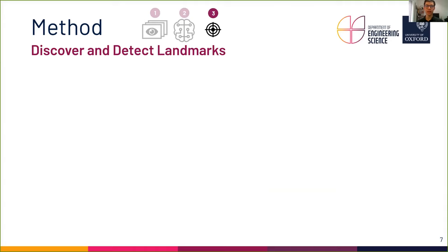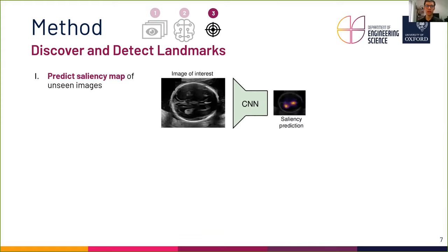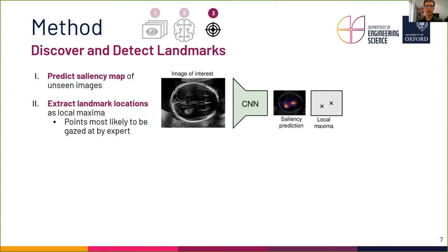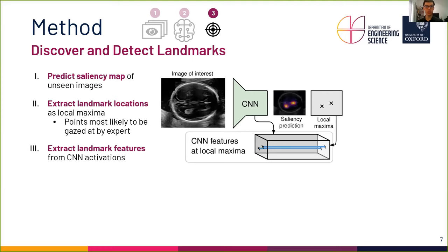Step three is the actual discovery and detection of the salient anatomical landmarks. First, the trained CNN is used to predict the visual saliency maps of the images of interest. Next, the landmark locations are extracted by computing the local maxima of the saliency maps — these are the points that the expert would most likely gaze at. In addition to localizing the salient landmarks, we would like to assign them semantic labels so that they can be matched across images. Therefore, we extract the CNN features of the landmarks — that means we extract the activations of the last CNN layer at the positions of the local maxima.